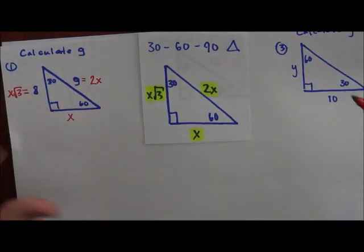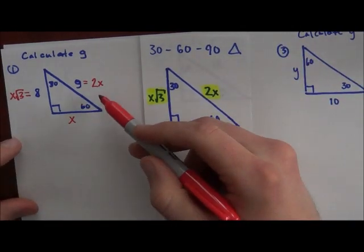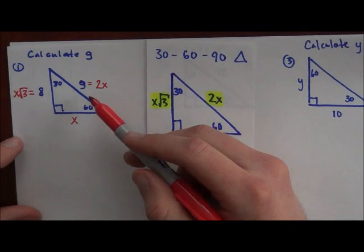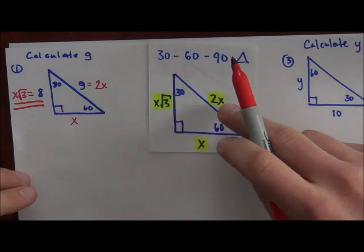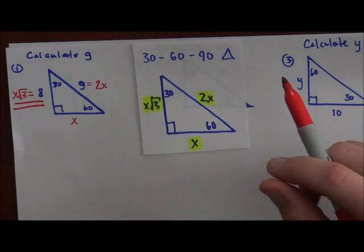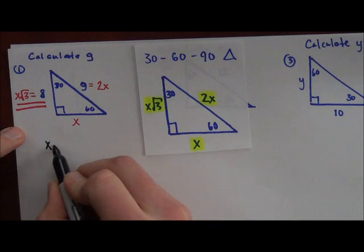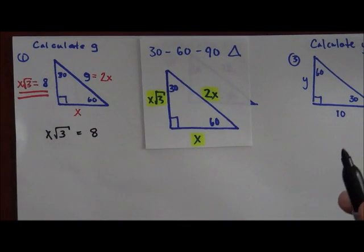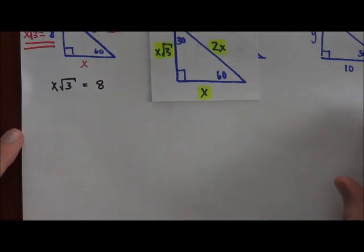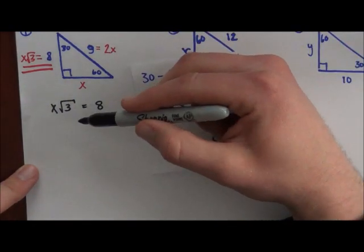G equals 2X, but that has two unknowns so it won't help directly. However, X√3 = 8 lets me solve for X. Once I have X, I can find the hypotenuse G by doubling it. So I set up the equation: X√3 = 8 and solve for X. There are two methods — I'll show both and you can pick which you prefer.